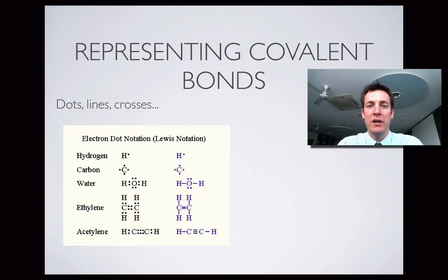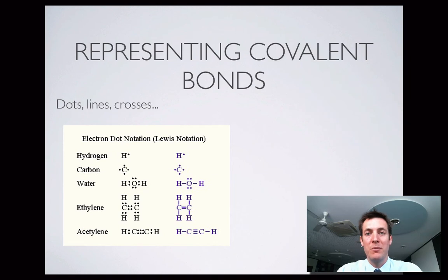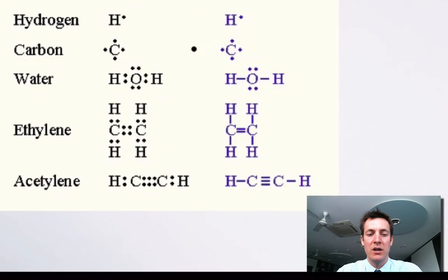And finally, just a couple of different ways that you might see covalent bonds represented. In electron dot diagrams, we often use dots to represent electrons, unsurprisingly. So here's a hydrogen atom with its one electron shown as a dot, carbon atom with four. Here's a water molecule, which is hydrogen atoms sharing electrons with oxygen. So you can show them as pairs of dots. You could show them as pairs of crosses if you prefer. So there's no difference between those things.